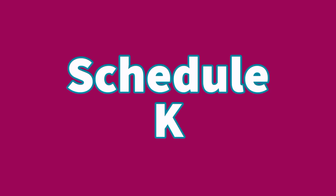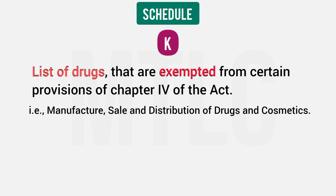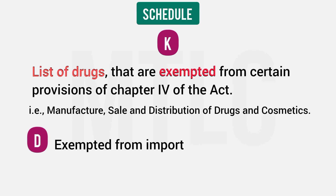Schedule K is the list of exempted drugs. While Schedule D covers exemptions related to import only, Schedule K covers Chapter 4 of the Act — that is, manufacture, sale, and distribution of drugs and cosmetics. Schedule K exemptions apply to manufacture, sale, and distribution.